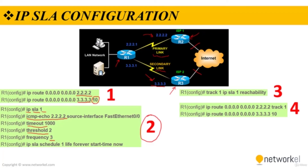After defining the IP SLA operation, the next step is to define an object that tracks the SLA probe. You accomplish this object tracking with the commands used in this step. This command will track the state of the IP SLA operation. If there are no ping responses from the next-hop IP, the track will go down, and it will come back up when the IP SLA operation starts receiving ping responses again.